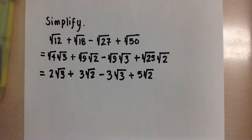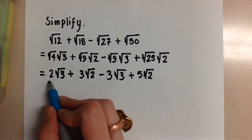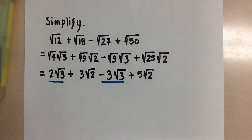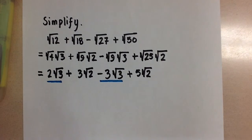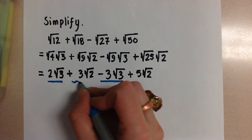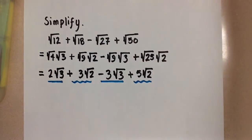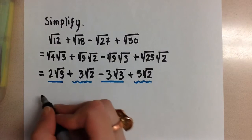And now after we have reduced all of them, we see that we do have like radicals. Here we have a root 3 and here we have a root 3, and here we have a root 2 and here we have a root 2. So we can go ahead and combine these like radicals together.